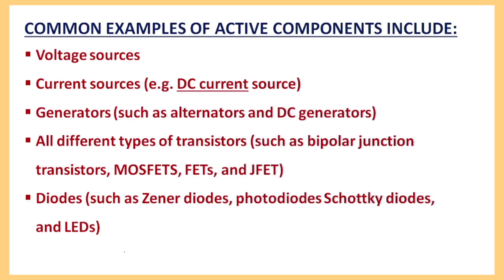I will tell you the examples of active elements. This is the voltage source, which means it provides electrical energy to the circuit. We also see current source. We also provide generators such as alternator and DC generator. We also provide all different types of transistors such as bipolar junction transistor, MOSFET, FET, and JFET — these are all active elements or active components.